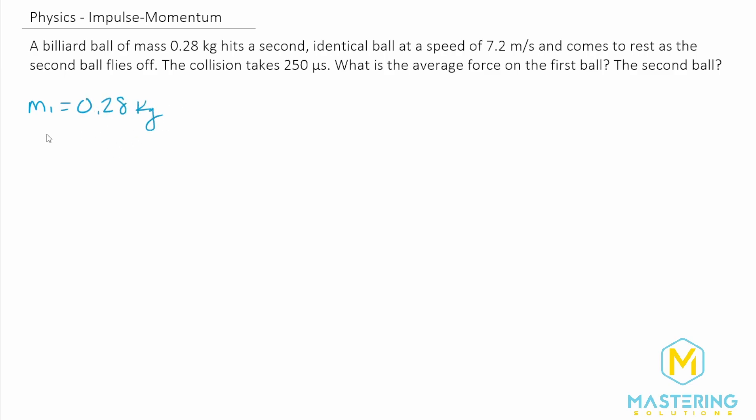And the second ball, which is identical, so M2 is also 0.28 kilograms. They say that the first ball shoots off at an initial speed of 7.2 meters per second, and then it comes to rest. So V final is equal to 0 meters per second as the second ball flies off.